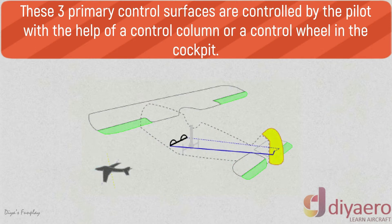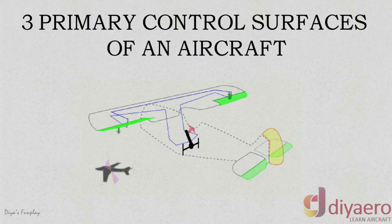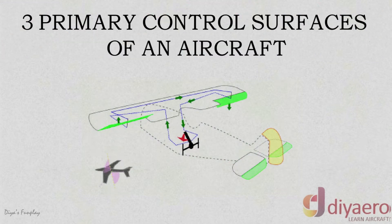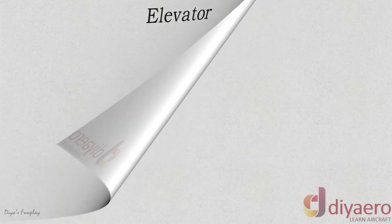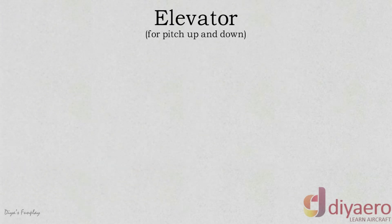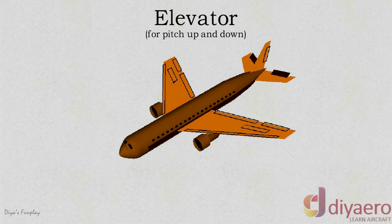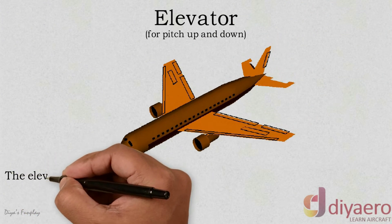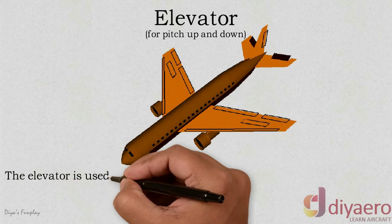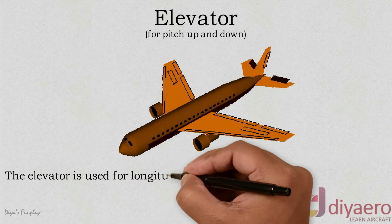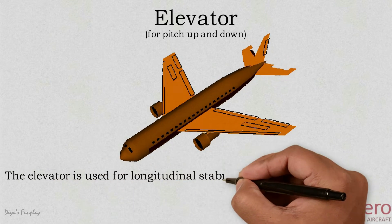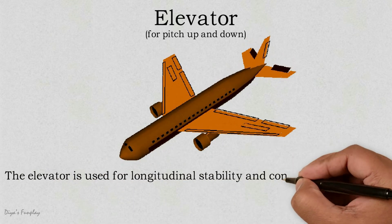Elevator. The elevator is controlled by the forward and the backward movement of the control column. Forward movement of the control column moves the elevator down, which in turn pushes the nose of the aircraft down.